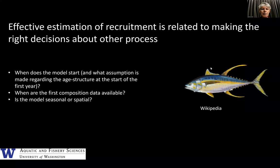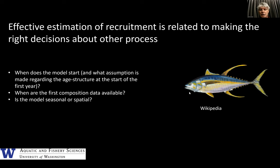There are a number of ways to get estimation wrong. I'm not going to talk about all of them as they'll be covered in other talks during the workshop. In particular: what about when the model starts and what do you assume about it? Obviously the earlier you start, the more assumptions you need to make — either about the state of the stock or which recruitments to estimate — and this is related to when the first composition data appear. There are also complexities related to seasonal models and spatial models, both of which occur in some tuna fisheries.